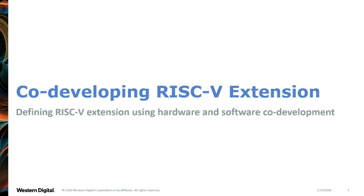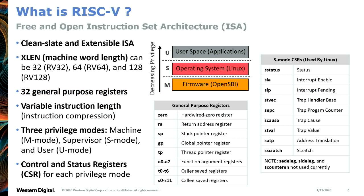Let's start with co-developing a RISC-V extension. Very few people are actually familiar with RISC-V, so it's better to touch base quickly. It's a free and open ISA, a clean-slate extensible ISA. It supports 32-bit, 64-bit, and future 128-bit machine word lengths. It has 32-bit general-purpose registers, supports instruction compression and variable length instructions, and has three privilege modes. The picture here shows the three distinct privilege modes: M mode for platform-specific firmware, S mode for OSes, and U mode for apps. We have control and status registers for each mode. Any operating system like Linux just needs eight CSRs, so it's pretty simple.